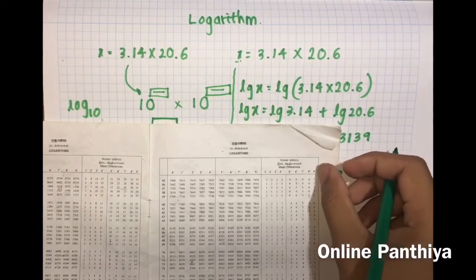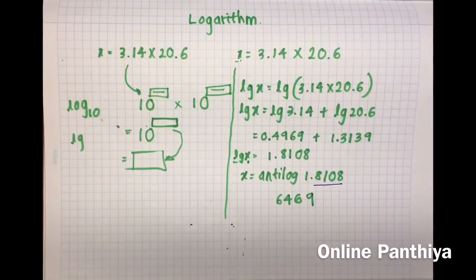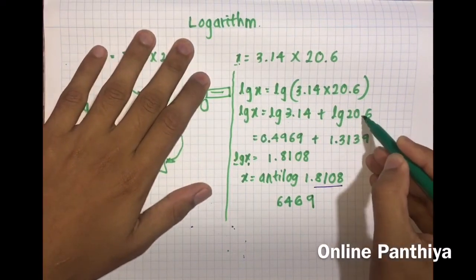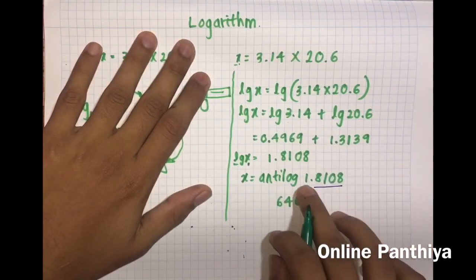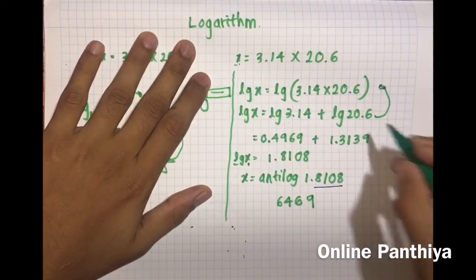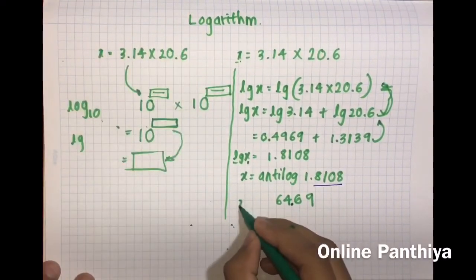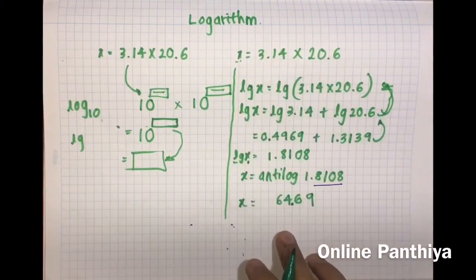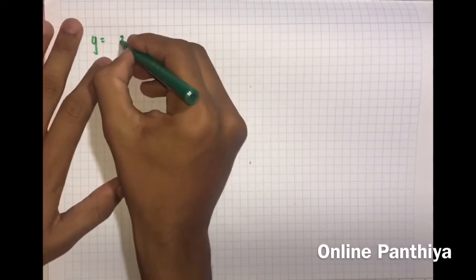The value at row 64, column 6 is 8102, but the actual value needed is 8108. The difference is 6. Find where this difference of 6 appears in the mean difference columns on the same row — it is under column 9. So write 9. Now, the number before the decimal was 1, meaning the decimal was placed after two numbers. So in the actual answer, place the decimal after two numbers. Therefore x equals 64.69.